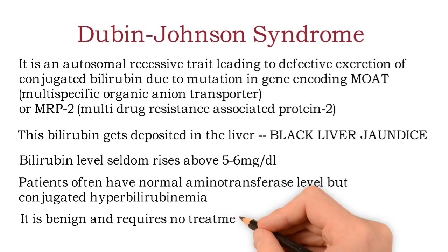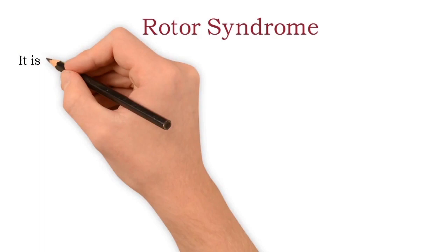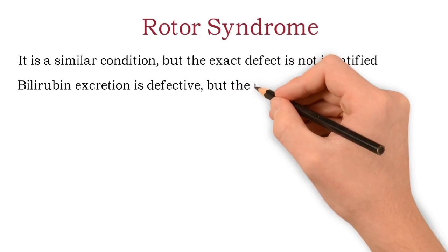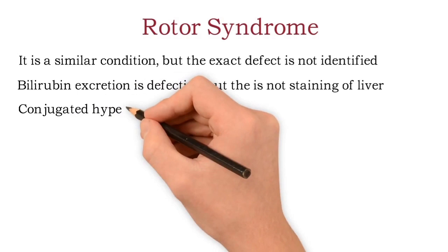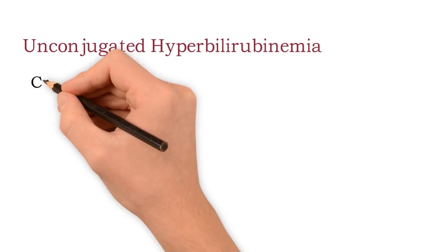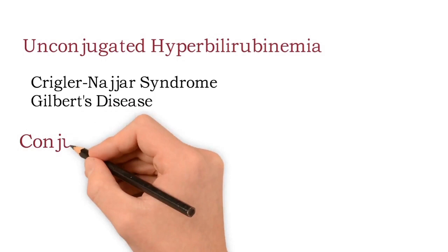The last congenital hyperbilirubinemia is Rotor syndrome. It is a similar condition to Dubin-Johnson syndrome but the exact defect is not identified. Bilirubin excretion is defective but there is no staining of the liver. Here also there is conjugated hyperbilirubinemia, and it is a benign condition requiring no treatment. In summary: unconjugated hyperbilirubinemia is seen in Crigler-Najjar syndrome and Gilbert's disease, whereas conjugated hyperbilirubinemia is seen in Dubin-Johnson syndrome and Rotor syndrome.